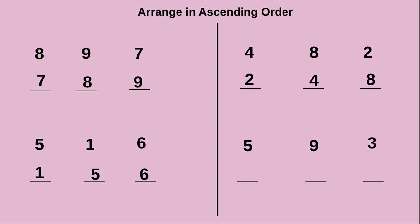Now we will see the next example. They have given 5, 9, 3. Which is the smallest number here? We are looking for the smallest number because we are arranging in ascending order — that means arranging from smallest to greatest. Yes, 3 is the smallest number, so we arrange 3 first. After that, the next smallest is 5. At last, the remaining number is 9.